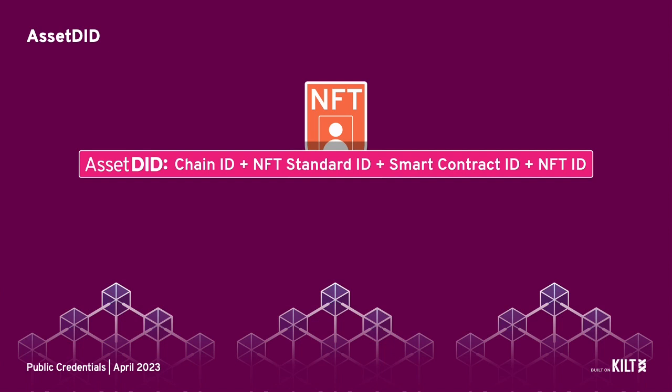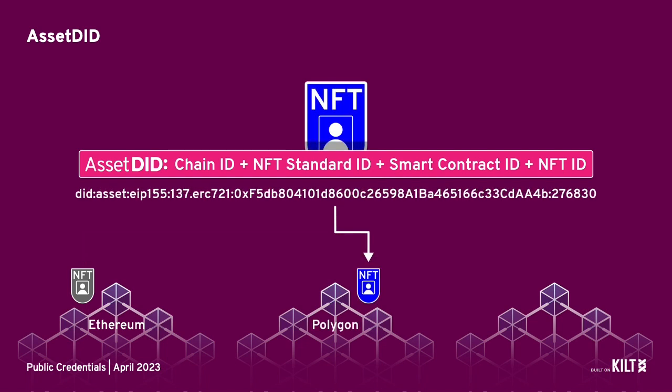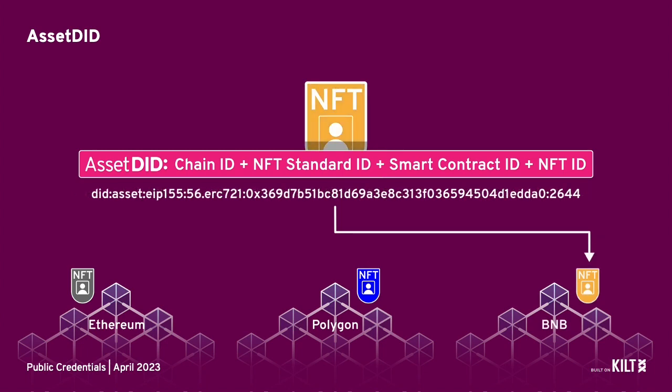Asset DIDs are unique identifiers and cross-chain by nature. They are made up of information about that NFT: its chain ID, NFT standard ID, smart contract ID, and NFT ID. With a unique asset DID, every individual NFT can be identified, regardless of whether its smart contract is located on the Ethereum blockchain, the Polygon blockchain, or the Binance blockchain.